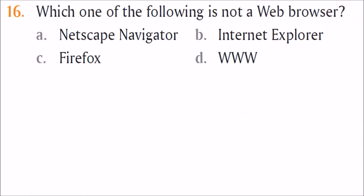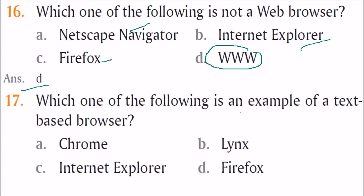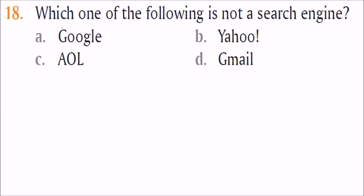Which of the following is not a web browser? Netscape was the first made public, Firefox is a famous open-source browser, and IE is by Microsoft. WWW — World Wide Web — is not a web browser, so the answer is D. For text-based browsers, Linux is the example since Chrome, IE, and Firefox are all graphical. Gmail is not a search engine — it is a service for sending and receiving electronic mail. So the answer for 'not a search engine' is D: Gmail.